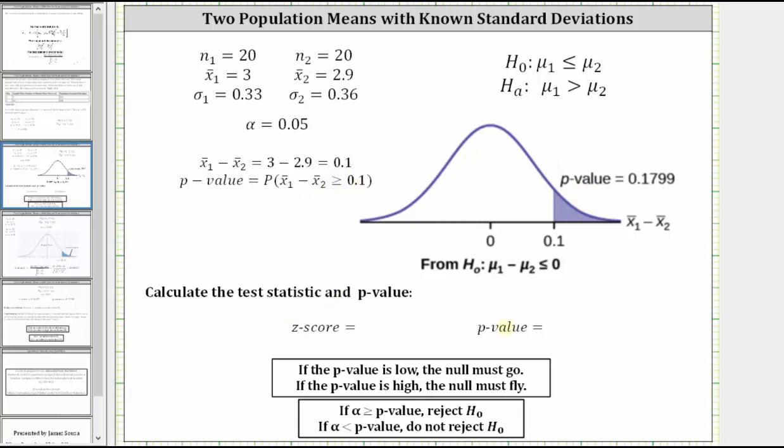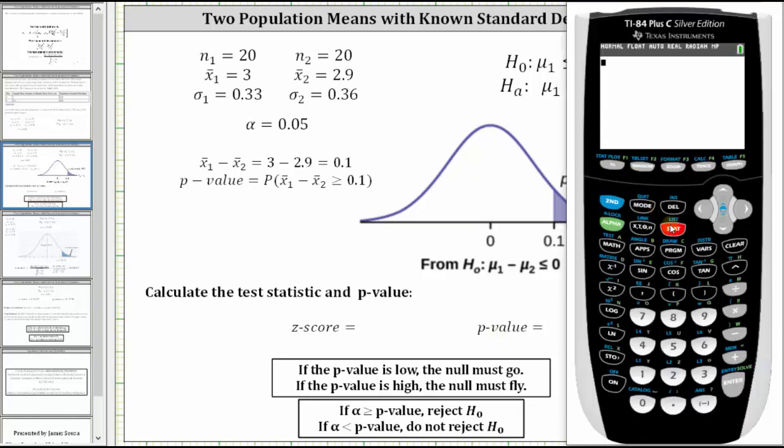Now let's find the z-score and p-value on the TI-84. To do this, we press STAT, right arrow to tests. We're performing a two-sample z-test, not a t-test because we have known population standard deviations. We want option three.